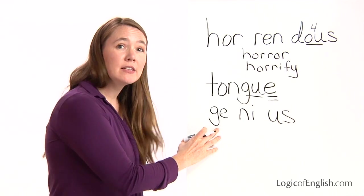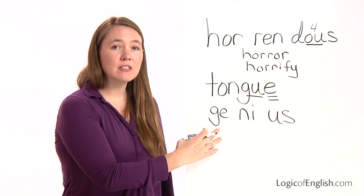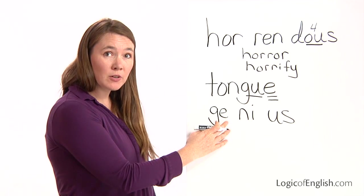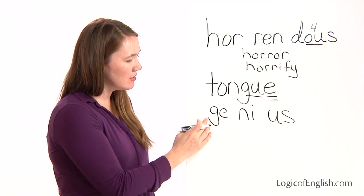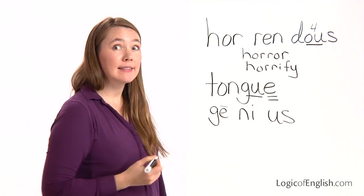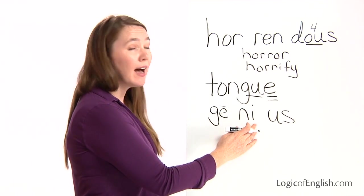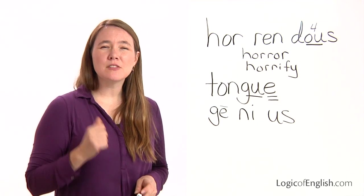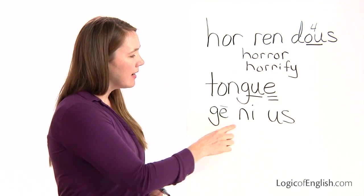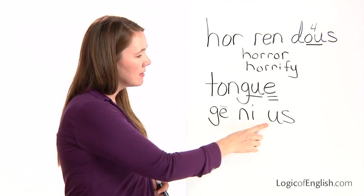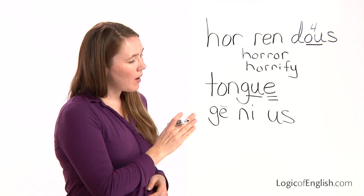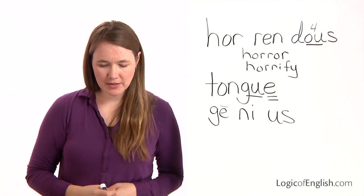Do you know why the G said J here? G may soften to J before an E, I, or Y. So here it's before E, so it says J. Do you know why the E said its name? Because it's at the end of the syllable. Then we have the I saying E — the I has four sounds: i, i, e, y — and here it's saying its E sound. And then we have 'us': genius. That is why genius is spelled in that manner.